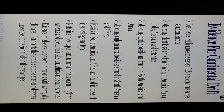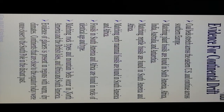Evidence of continental drift includes: coal deposits stretching across eastern United States, South Africa, and continuing across southern Europe; matching plant fossils found in South America, Africa, India, Australia, and Antarctica; matching reptile fossils found in South America and Africa; matching early mammal fossils found in South America and Africa; matching rock types and mountain belts in North America, British Isles, Africa, and South America; and evidence of glaciers present in regions with warm dry climates, suggesting those continents were once closer to the South Pole.